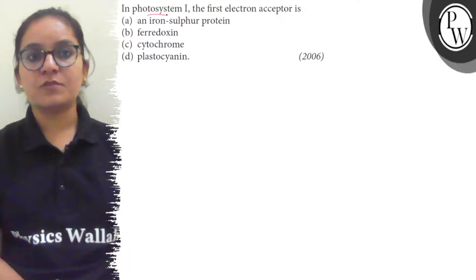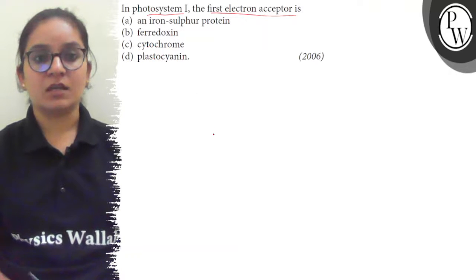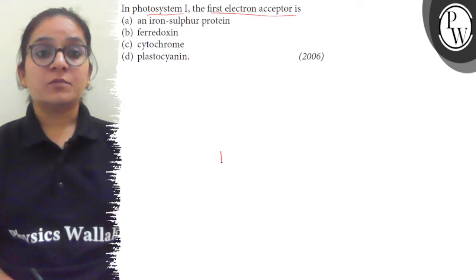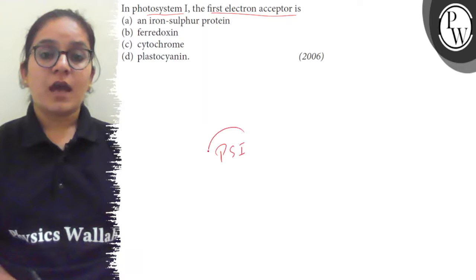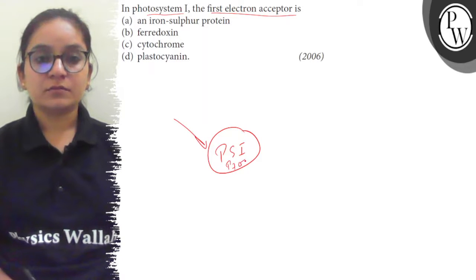Hello students, the question is: In photosystem I, the first electron acceptor is (a) iron-sulfur protein, (b) ferredoxin, (c) cytochrome, (d) plastocyanin. So, photosystem I absorbs the light - that is P700 - and gets excited when